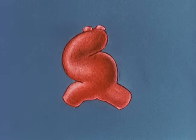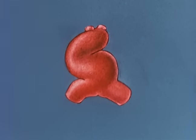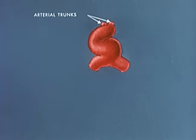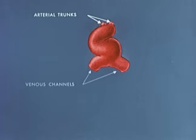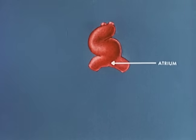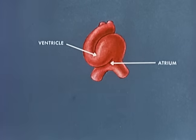Initially, the heart consists of a simple tube. It's anchored at one end by the differentiating arterial trunks and at the other by extensive venous channels which drain into the atrium. Being fixed at both ends, the cardiac tube grows rapidly in length and the embryonic ventricle is bent into a loop to the right of the midline.